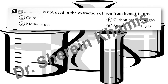Question number 7. What is NOT used in the extraction of iron from hematite ore? The choices are: coke (C), carbon monoxide gas, methane gas, and sulfur trioxide gas. We use coke, methane gas, and carbon monoxide, but we do not use sulfur trioxide — so the answer is sulfur trioxide.